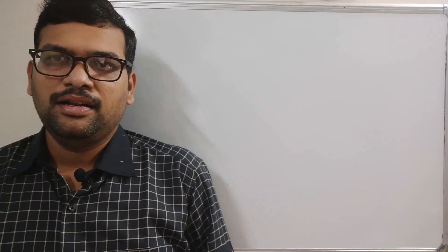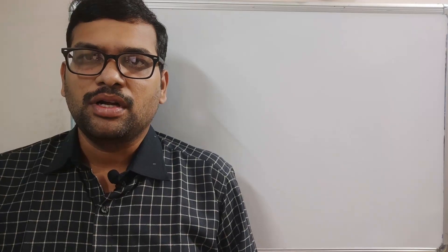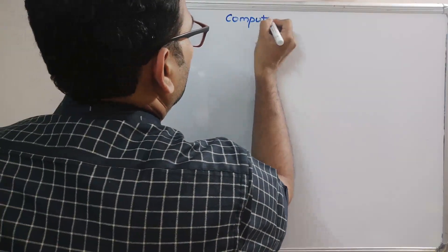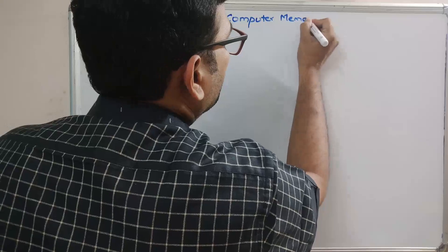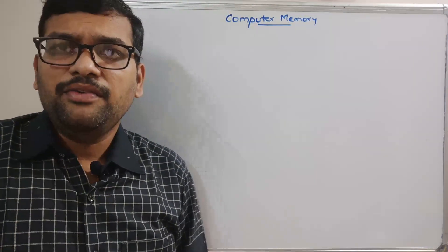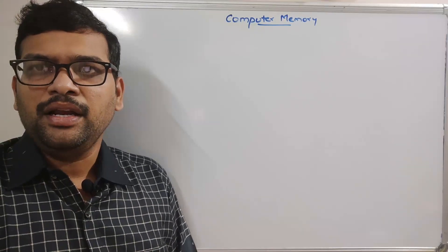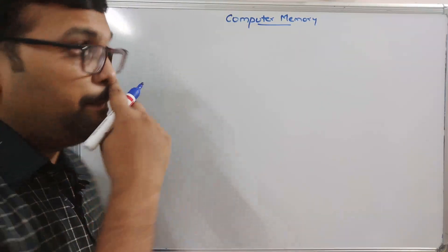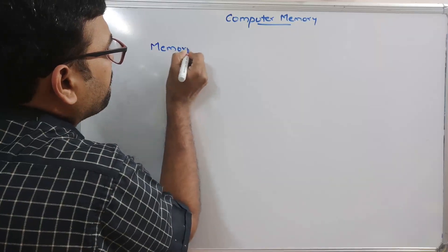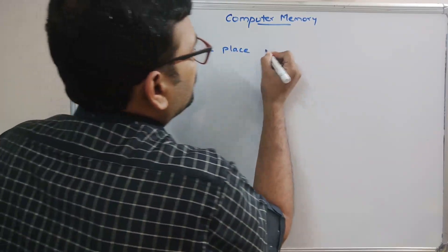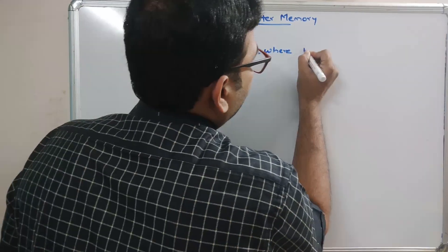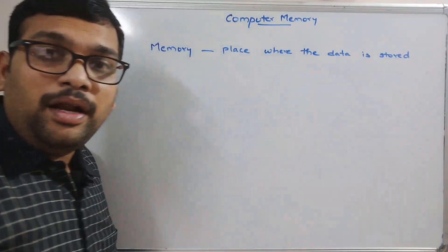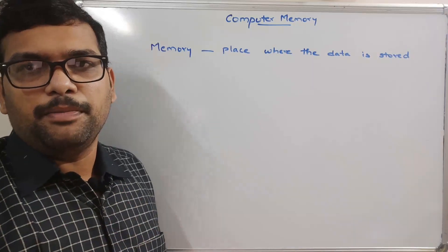Hello friends, welcome back to our channel. In today's session we'll discuss about computer memory. The main advantage of the computer is storing data, so where is this data stored? The place where the data is stored is called memory — memory means the place where data is stored.